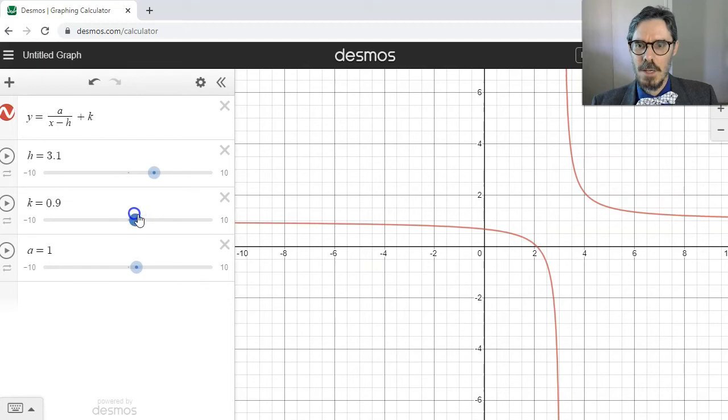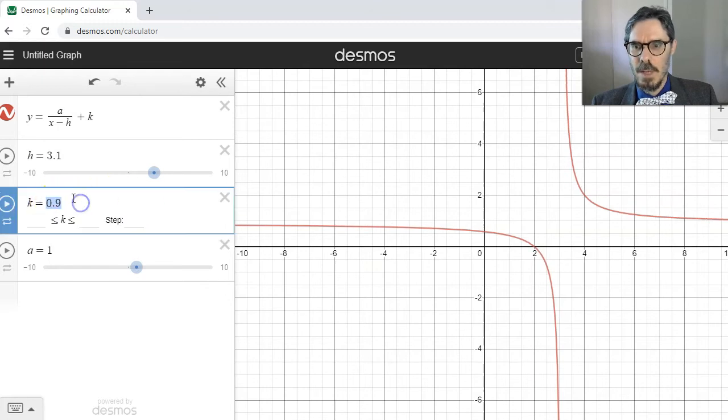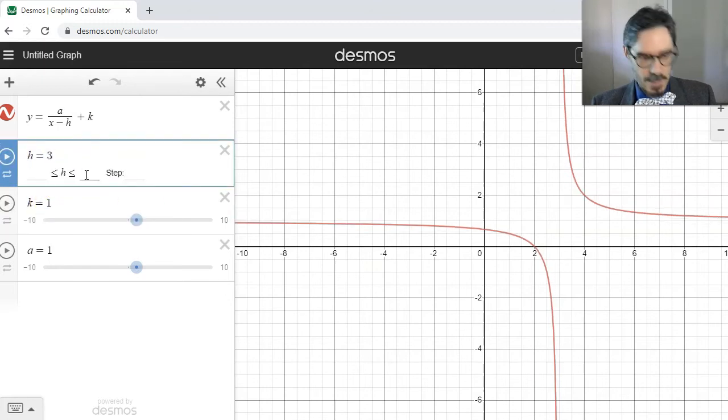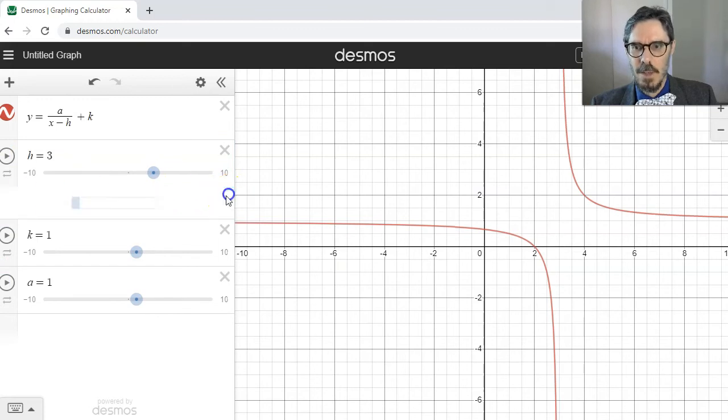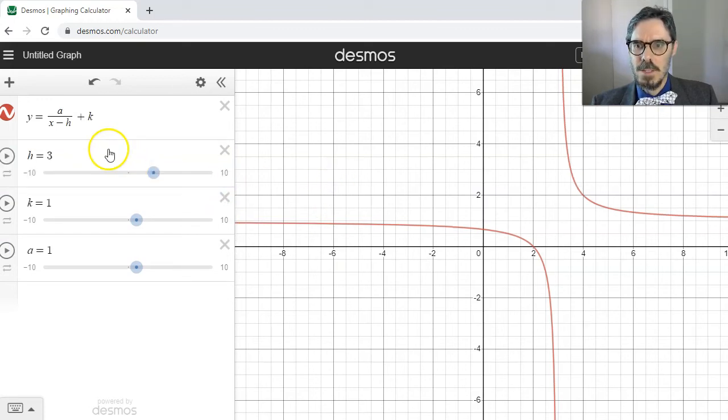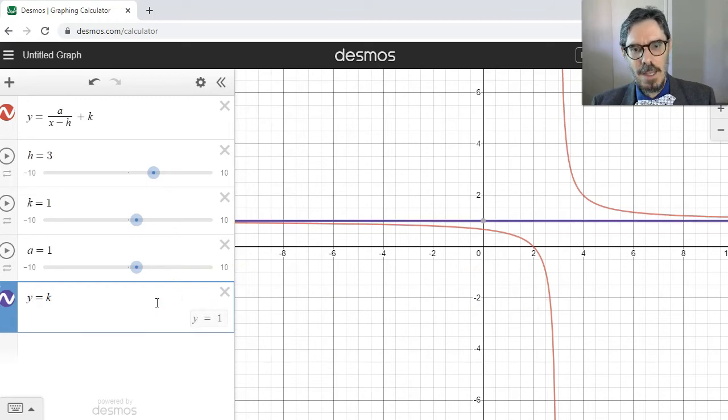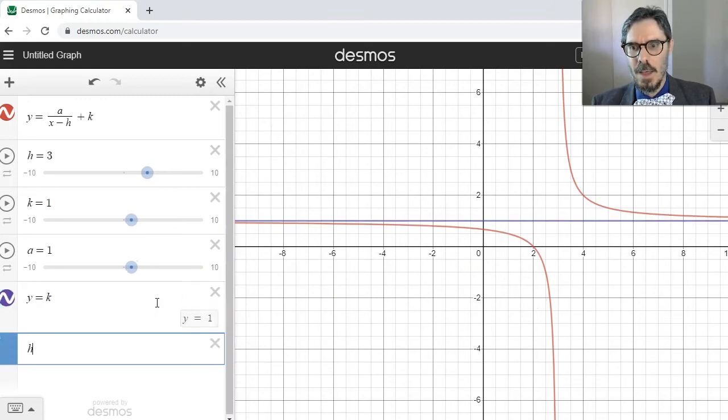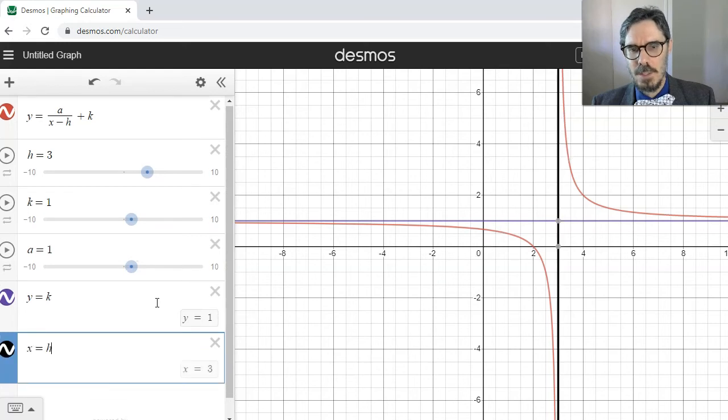Notice what happens to the asymptote. So if k is 1 and h is 3. Whoops, I didn't mind how to do that. If h is 3 and k is 1, what now are my two asymptotes for this graph? They are in fact y equals k and x equals h. Those are my two asymptotes.